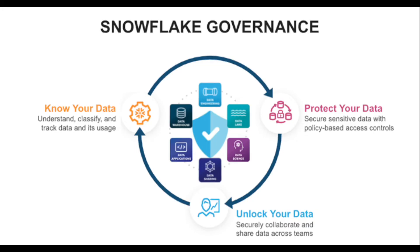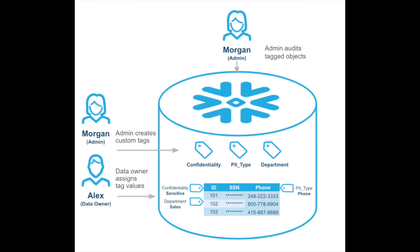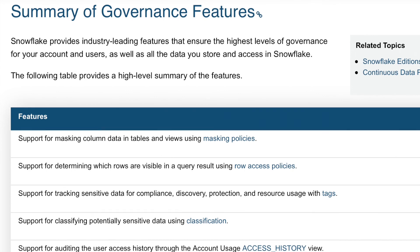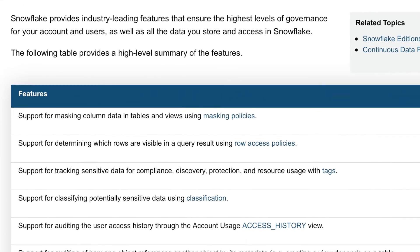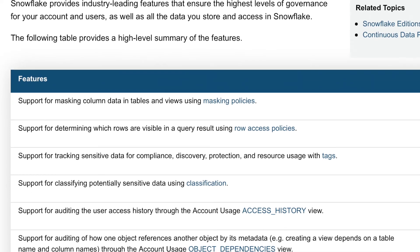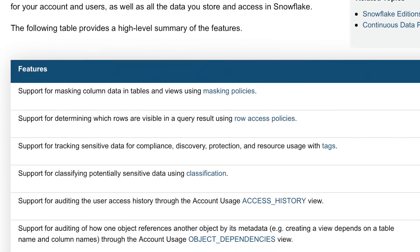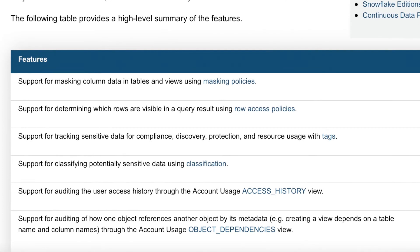The final key announcements are in the governance pillar — all about trusting Snowflake with your data. The first was tag-based masking, which allows for easier automation and assignment of masking policies for sensitive columns, based upon the tags assigned to the data. Next up is column data lineage, coming soon to private preview. Also in the pipeline is a new data governance interface built around new tags and masking policies, bringing those all together.